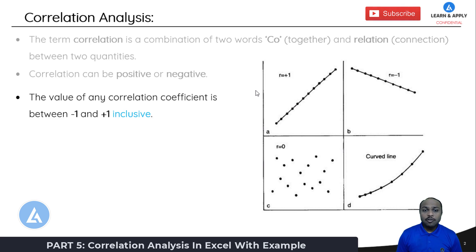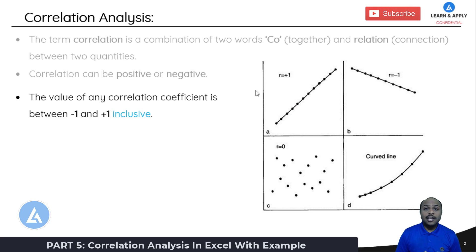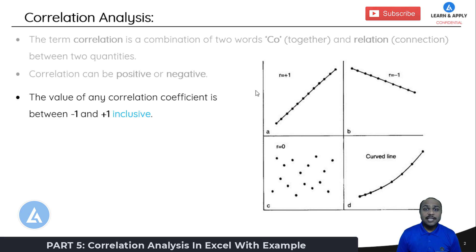The value of any correlation coefficient is between minus 1 and plus 1, inclusive of both. When the correlation coefficient has a negative sign, that indicates a negative correlation — meaning if we increase one variable there is a decrease in the other. When the sign of the correlation coefficient is positive, it indicates that increasing one factor results in a corresponding increase in the other variable, so the variables have a positive correlation.